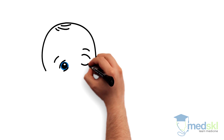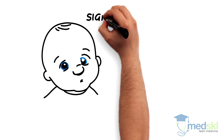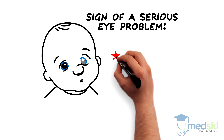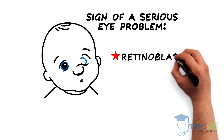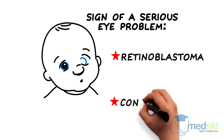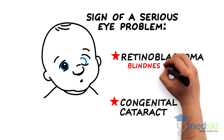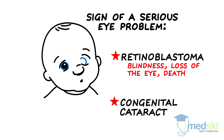In a child, strabismus and amblyopia can be the presenting signs of a serious eye problem. Retinoblastoma, a white tumour of the retina, and congenital cataract are two diagnoses that you cannot afford to miss. If missed, retinoblastoma can cause blindness, loss of the eye, and even death. Congenital cataract, if not treated urgently, can also cause blindness.